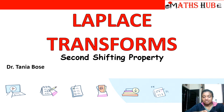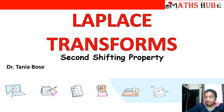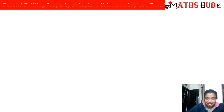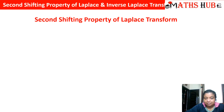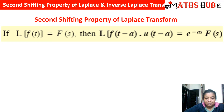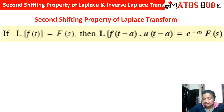Hello students and welcome to my channel. In this video I'll tell you about the second shifting property of the Laplace transform and apply it to questions. The second shifting property says that if Laplace of f(t) is equal to F(s), then Laplace of f(t minus a) multiplied by u(t minus a) is e raised to power minus as into F(s).